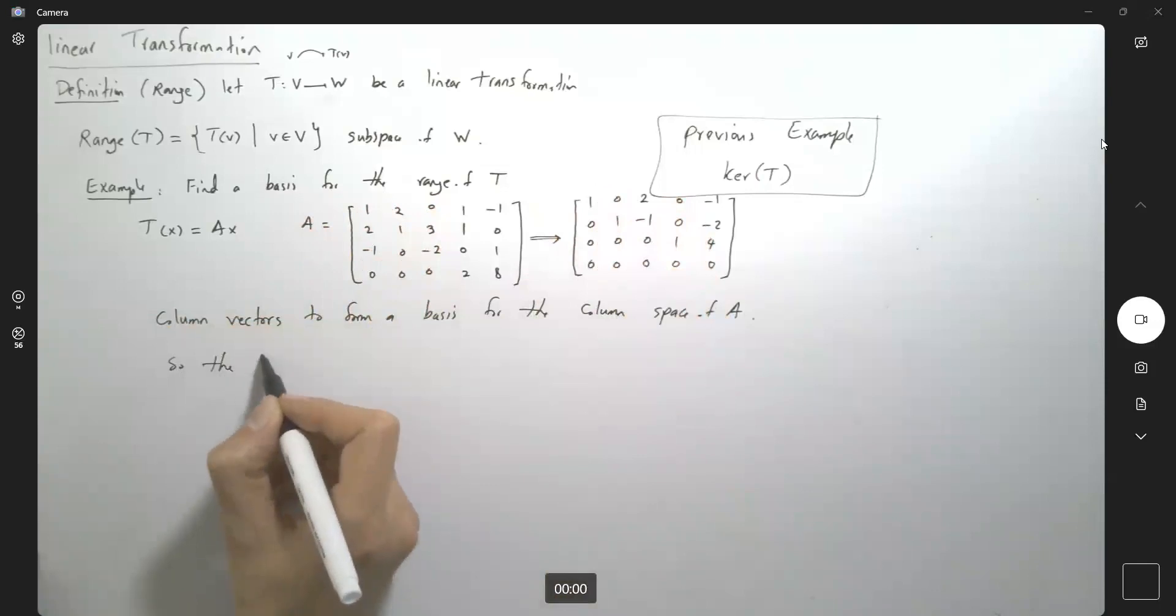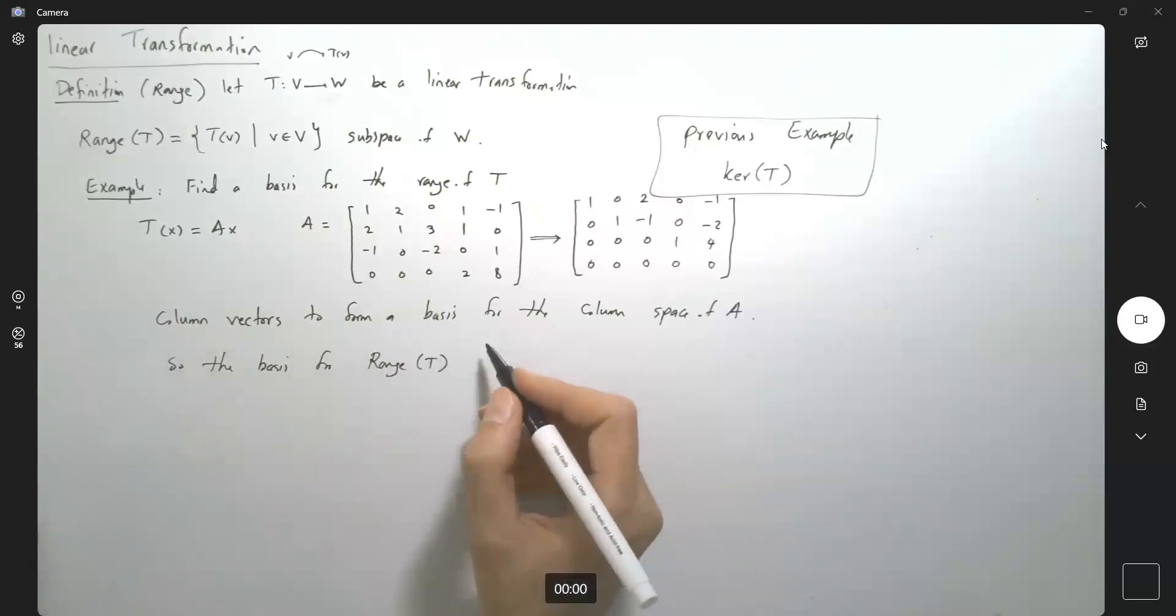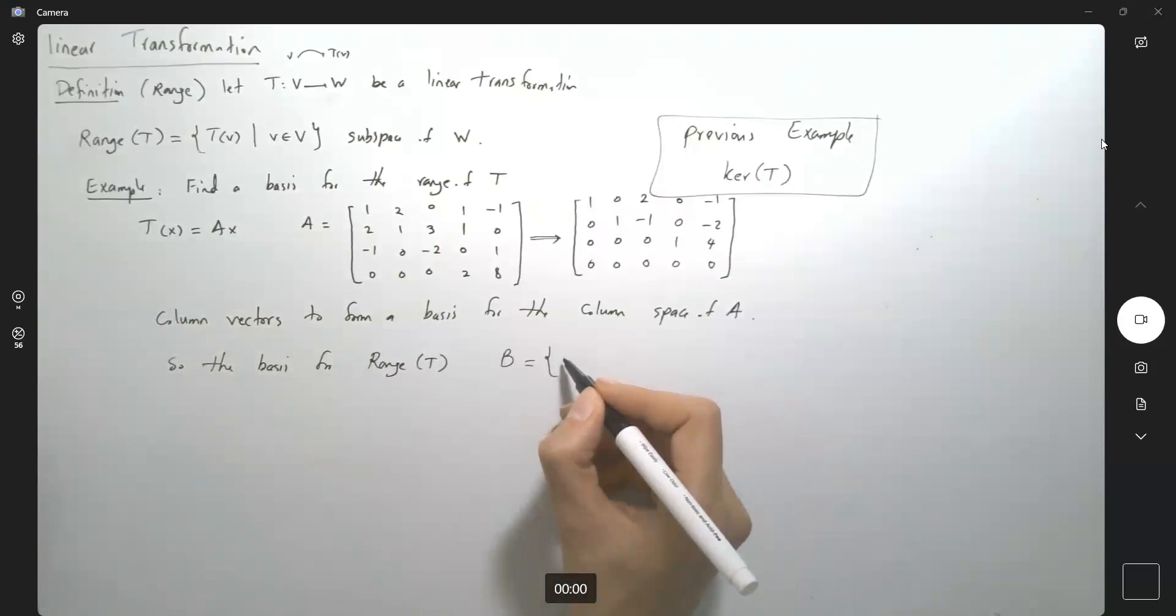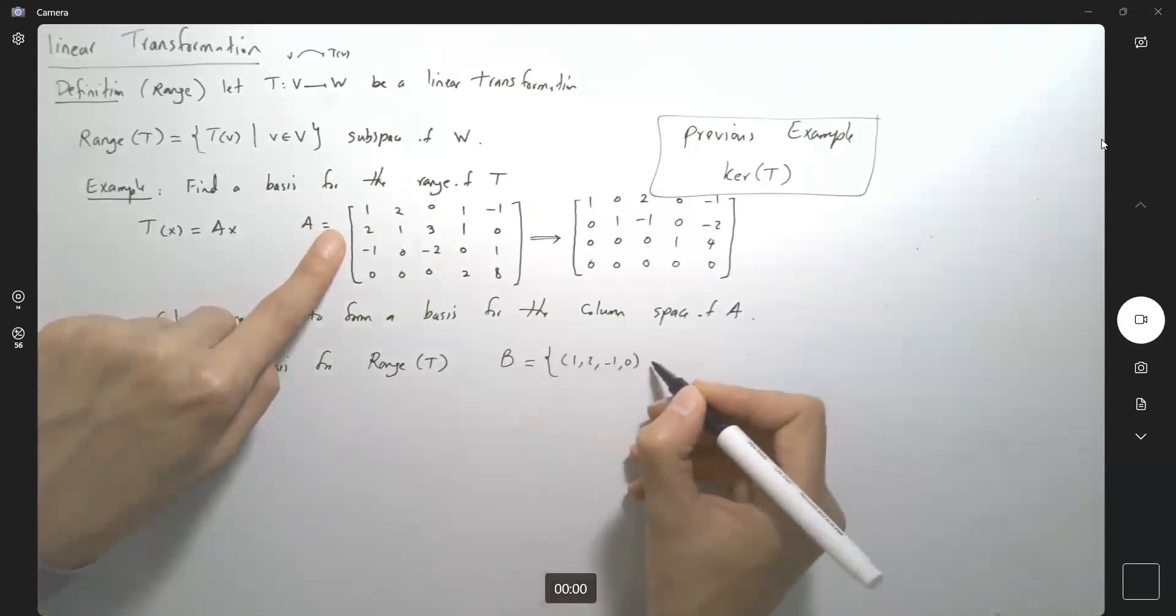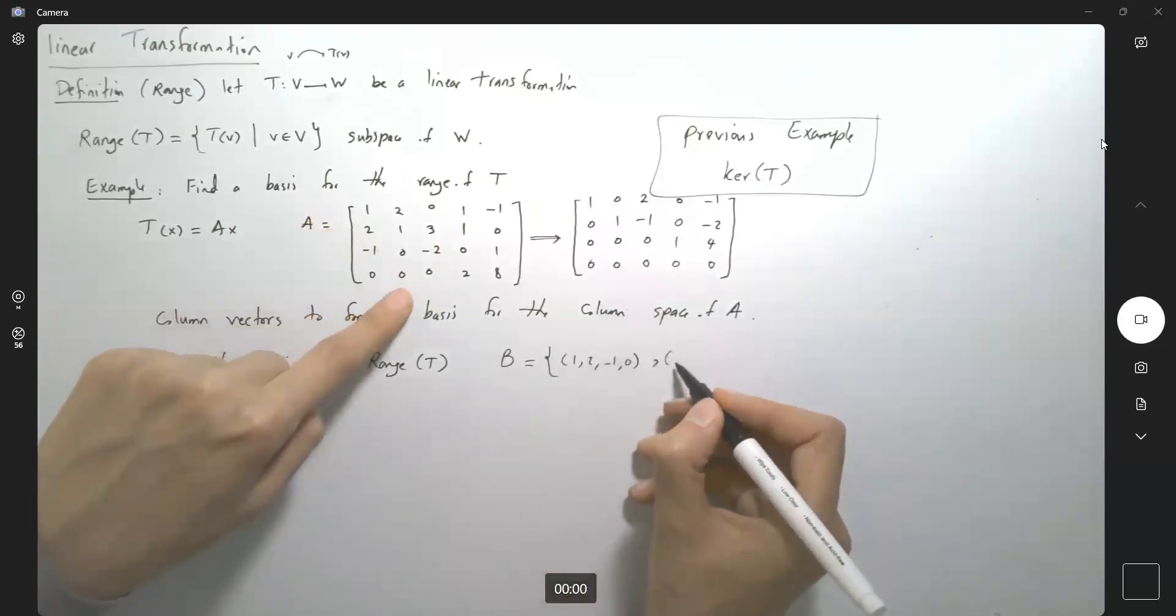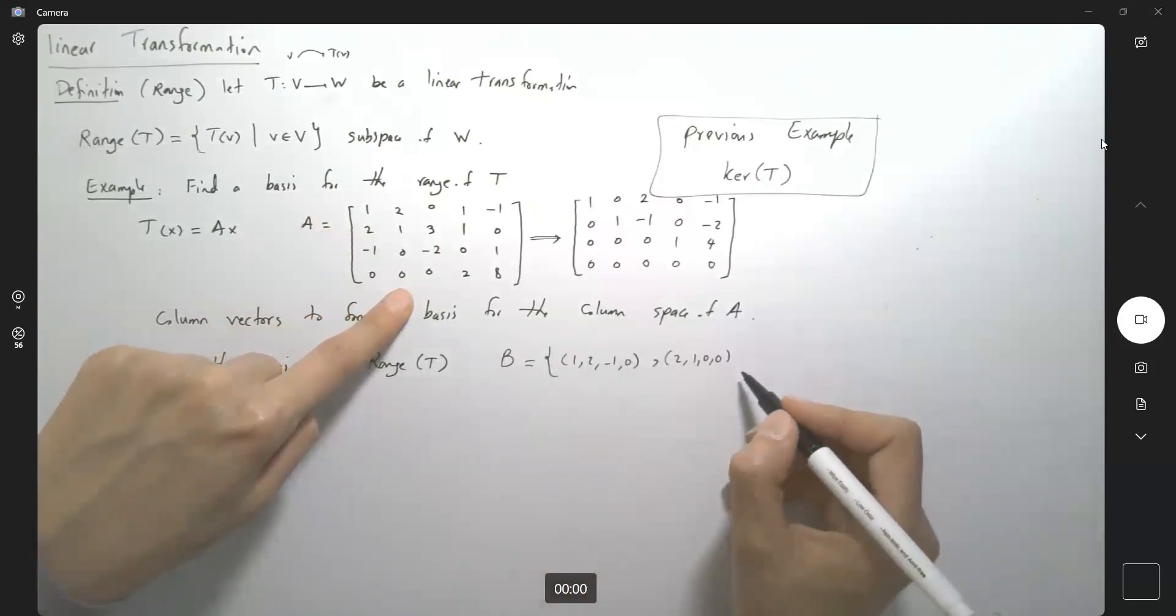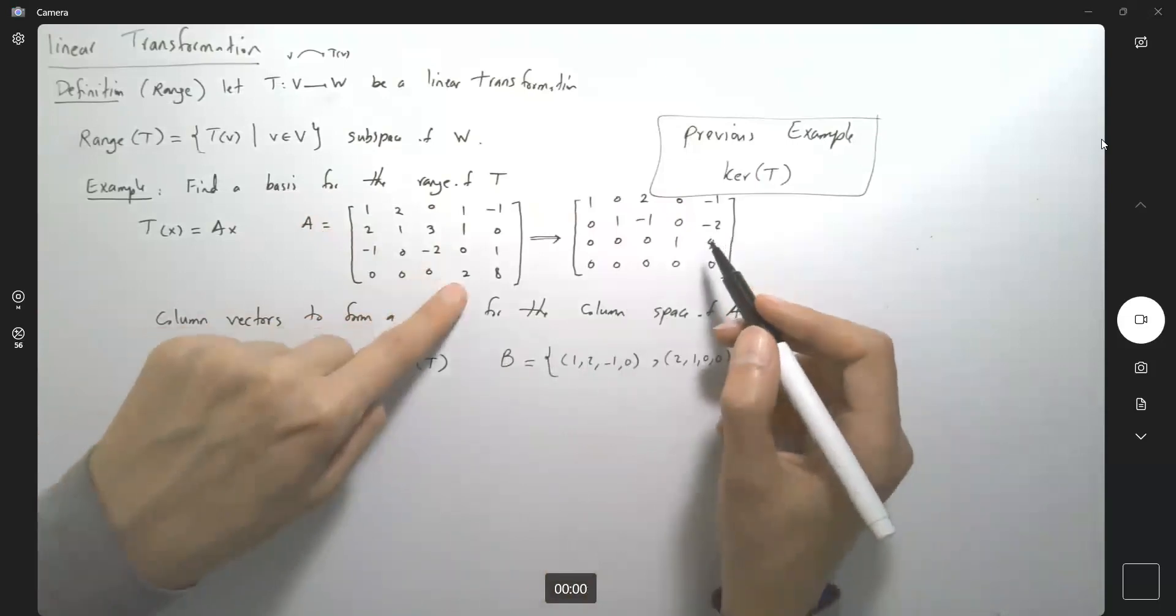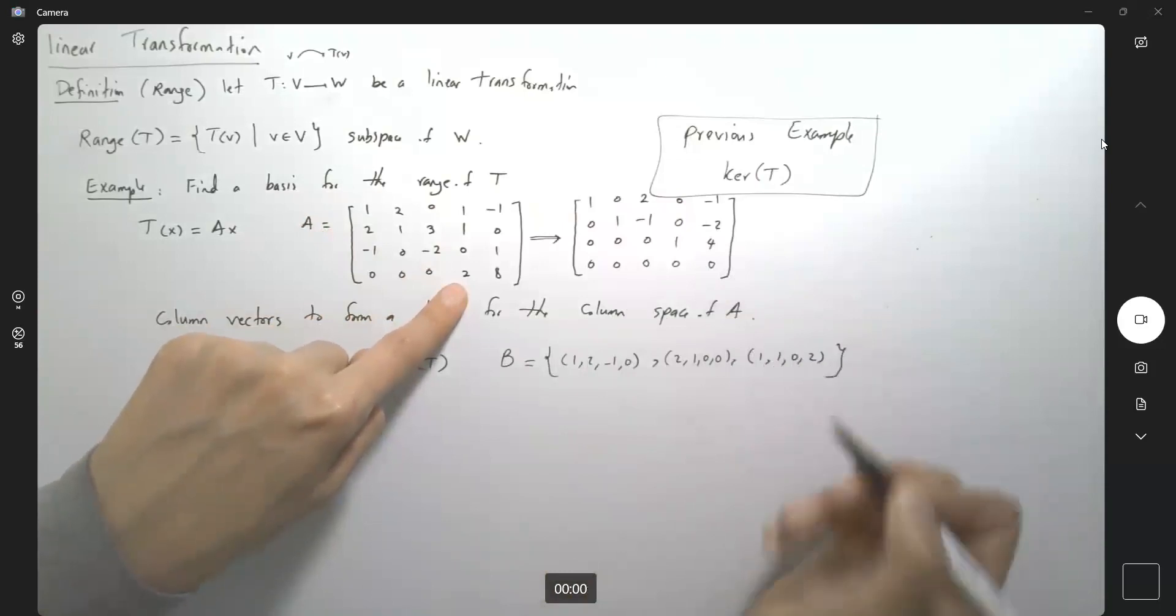So the basis for the range of T is going to be B equals to 1, 2, negative 1, and 0. And then here you have 2, 1, 0, and 0. And then here you have this guy which is 1, 1, 0, and 2.